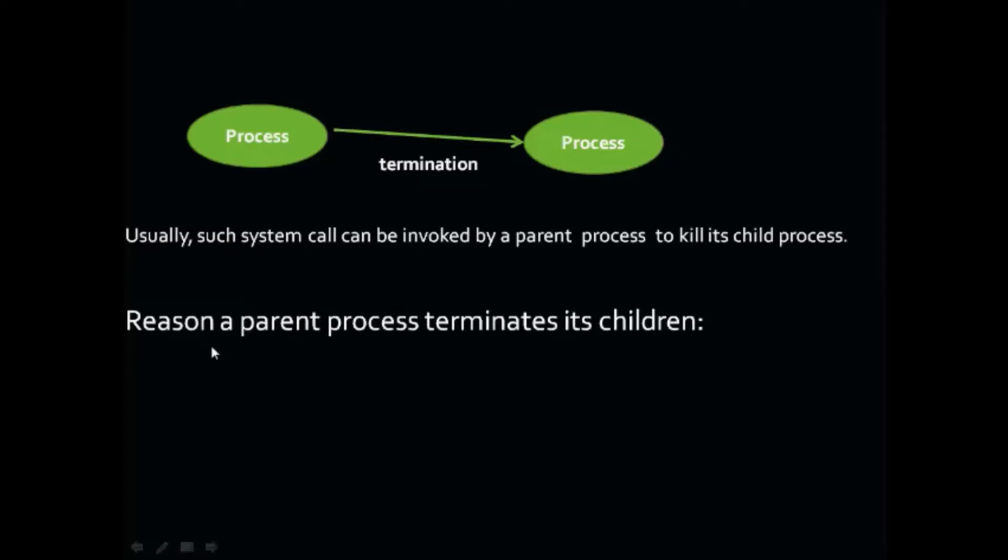Now why does a parent process need to kill its child process? There are some reasons a parent process needs to terminate the execution of its child process. One is that the task assigned to the child process is no longer needed, so the parent process terminates the execution of this child process.